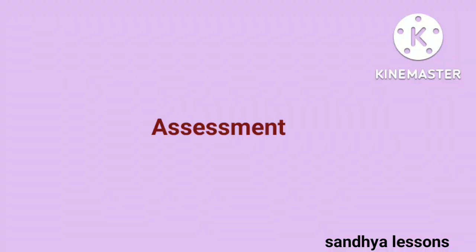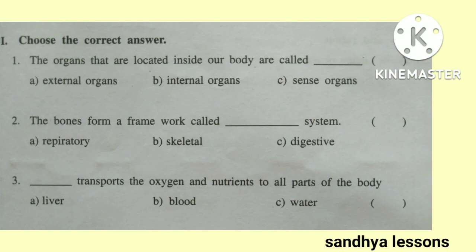Assessment. First, choose the correct answer. The organs located inside our body are called internal organs. The bones form a framework called the skeletal system. Blood transports oxygen and nutrients to all parts of the body.